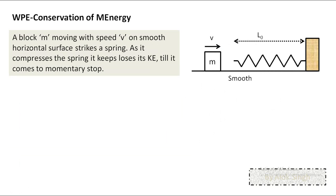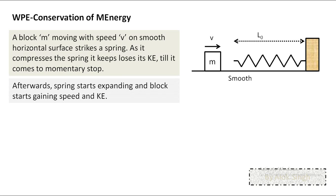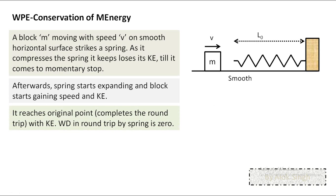In a similar experiment with a spring: if a block m moves at speed v on a smooth horizontal surface and strikes a spring, it keeps losing kinetic energy as the spring compresses until it comes to a momentary stop. Afterward, the spring pushes it back, and the block regains speed and kinetic energy. When it completes the round trip, its kinetic energy is the same as before. Thus the work done by the spring in the round trip is zero.